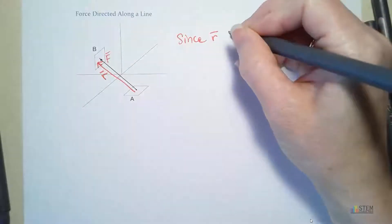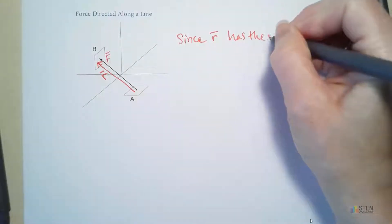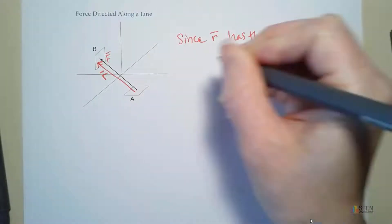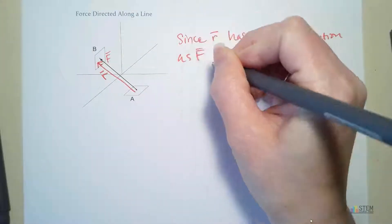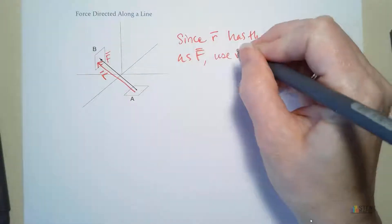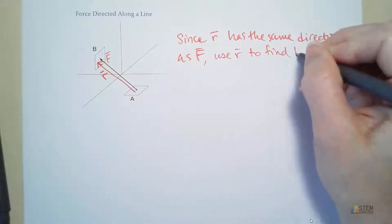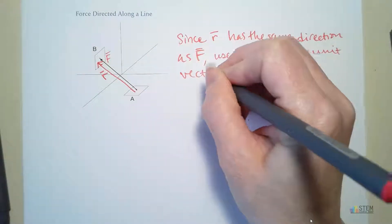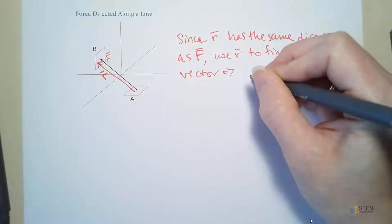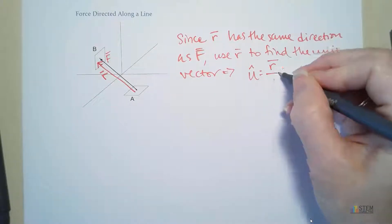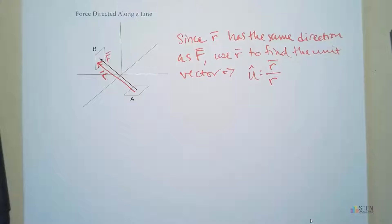So let's write that down. So let's put, since R has the same direction as F, our force vector, then let's use R to find the unit vector U. And U, if you remember, is just going to be position vector over R.